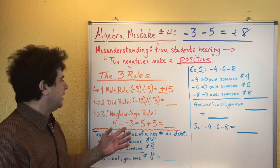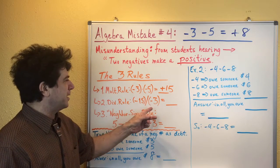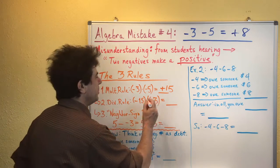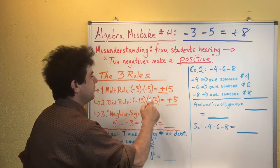And quite similarly for the division rule with two numbers. If you've got a negative number divided by a negative number, you're going to get a positive number. Negative 15 divided by negative three is positive five because 15 divided by three is five.